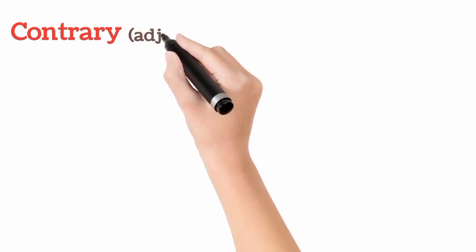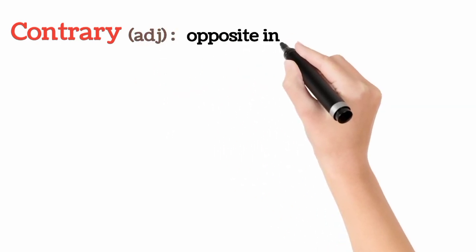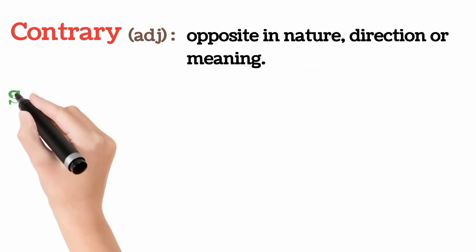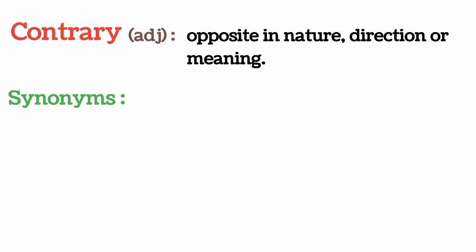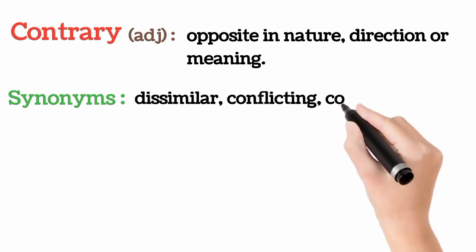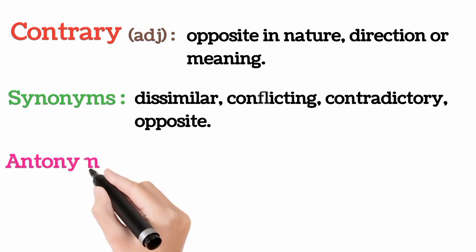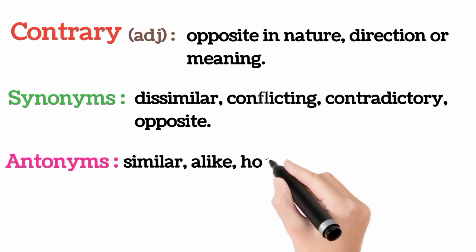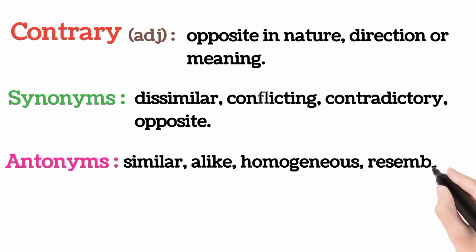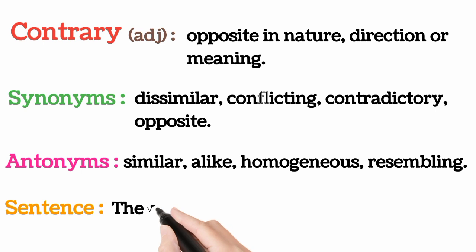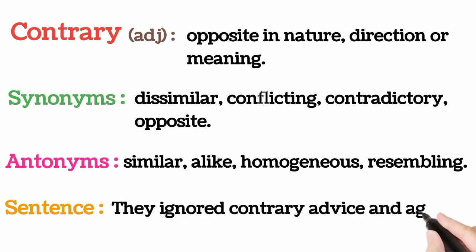Contrary, it's an adjective, which means opposite in nature, direction or meaning. Synonyms: dissimilar, conflicting, contradictory, opposite. Antonyms: similar, alike, homogeneous, resembling. They ignored contrary advice and agreed on the deal.